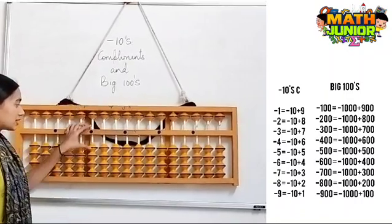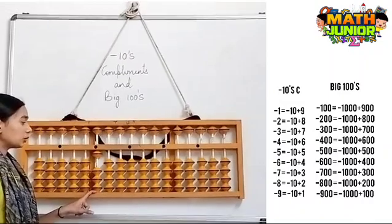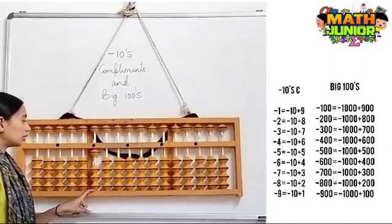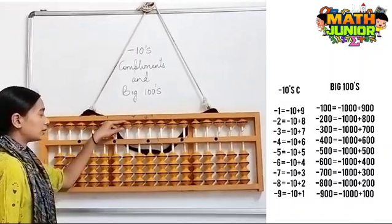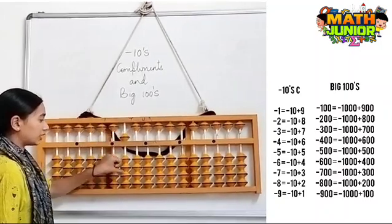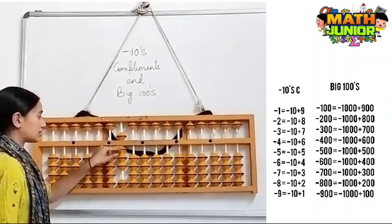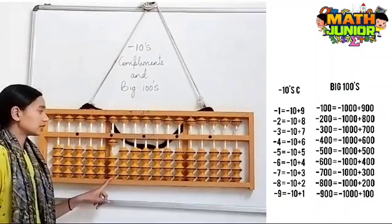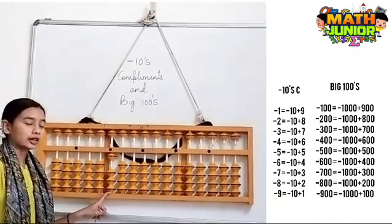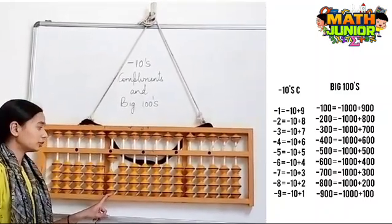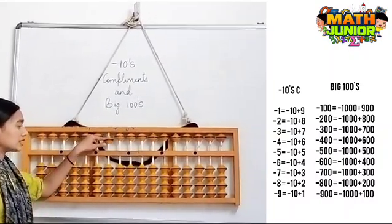Next, I have 1000 here and I need to remove 300. So the formula for minus 300 is minus 1000 plus 700.